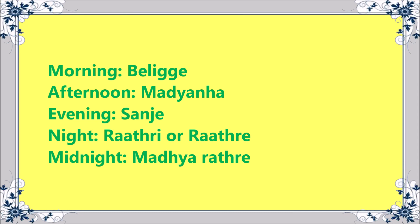Now let's see how to say morning, evening, and afternoon in Kannada. Morning is 'beligge' or 'munjane' — munjane is textbook Kannada but generally beligge is used. Afternoon is 'madhyanna', evening is 'sanje', night is 'ratri' or 'ratre', and midnight is 'madhya ratre'.